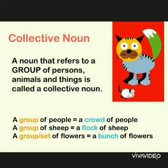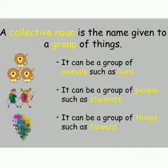For example, a group of people is called a crowd of people. A group of sheep is called a flock of sheep. A set or group of flowers is called a bunch of flowers. So, a collective noun is the name given to a group of things.